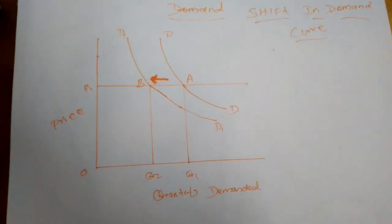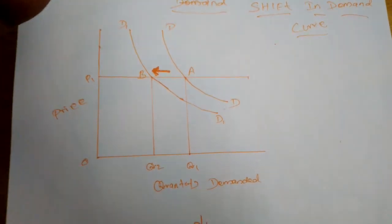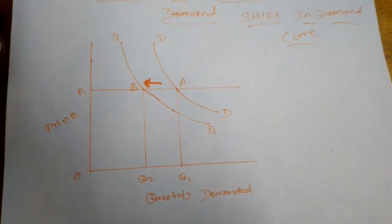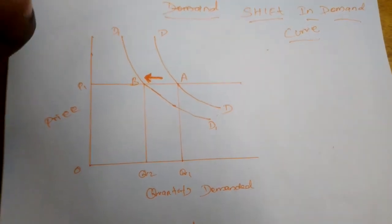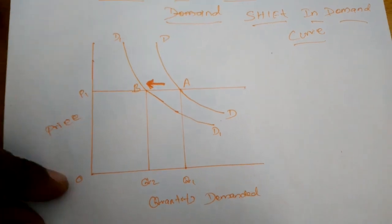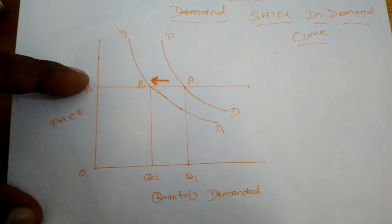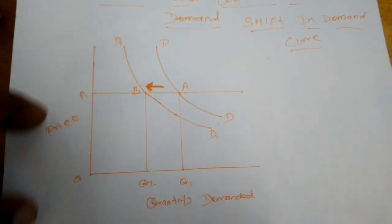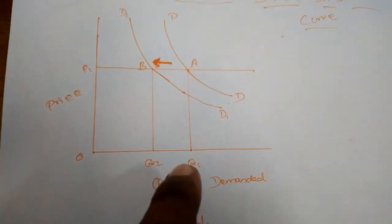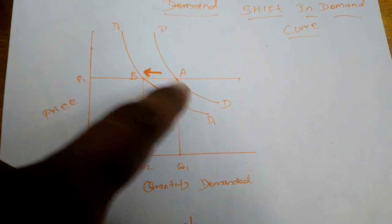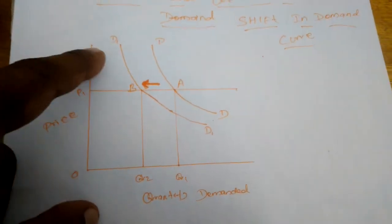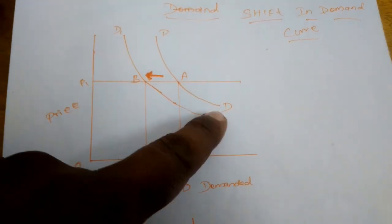If the demand for any commodity changes due to factors other than price, that is called a shift in demand curve. An increase or decrease in demand due to changes in the conditions of demand is shown by shifting the demand curve. In the first diagram, the price remains at OP1 — it never changes — but the quantity demanded increases from OQ to OQ1. When the quantity increases, the demand curve shifts from A to B.